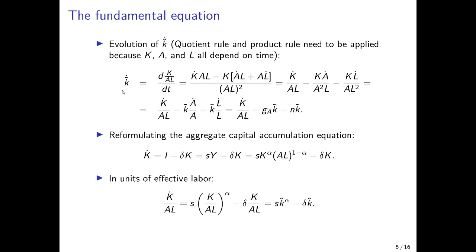Here we have the main complication that arises because we now allow for technological progress and population growth. We need to compute the evolution of capital per unit of effective labor over time by taking its time derivative. The definition of capital per unit of effective labor is aggregate capital stock divided by the stock of technologies and the labor force. However, all three variables depend on time, so when we take the time derivative we have to apply the quotient rule.